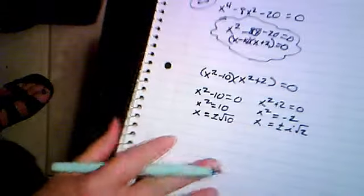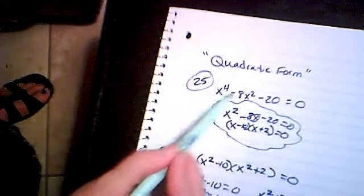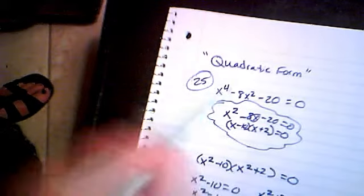So when you type this answer in, you're going to have four answers. You have the square root of 10, negative square root of 10, and then i square roots of 2, and negative i square roots of 2. We have 1, 2, 3, 4 answers. And we know that we're supposed to be looking for four answers because this is a fourth degree.